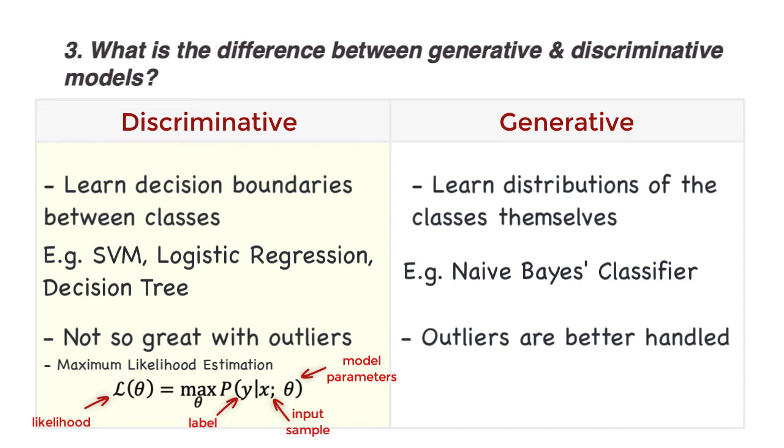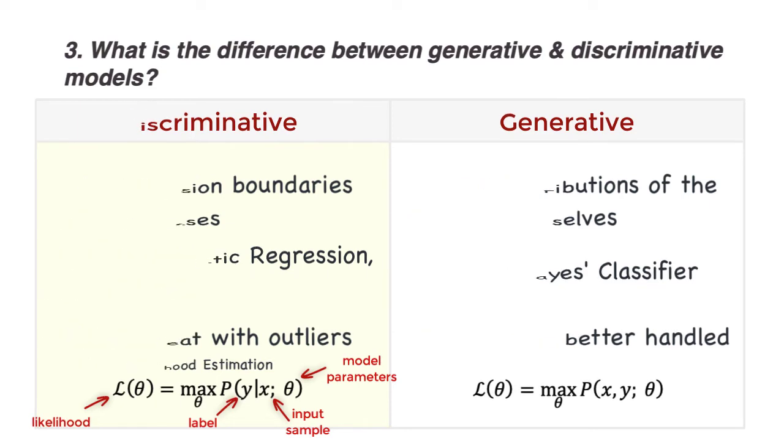While in generative models, like the Naive Bayes' classifiers, we maximize the joint likelihood. That is, the joint probability given the model parameters.